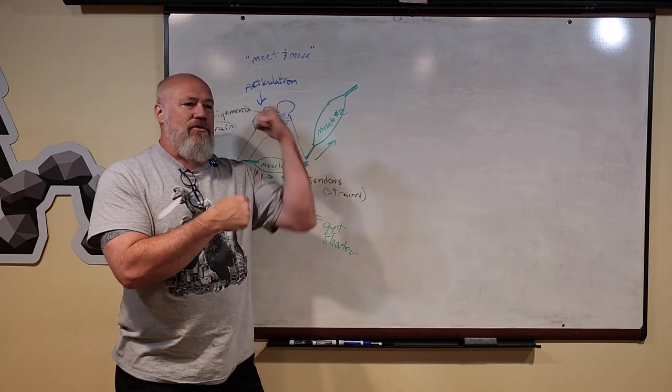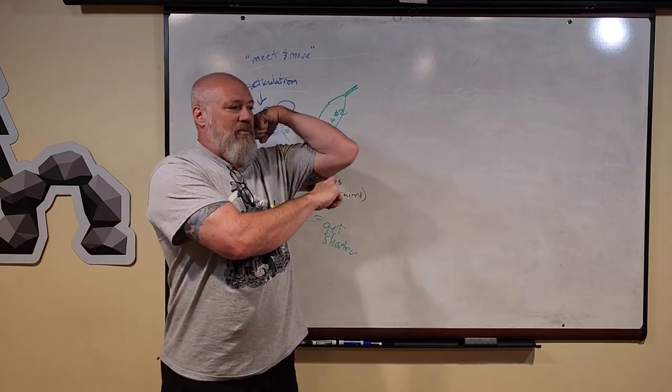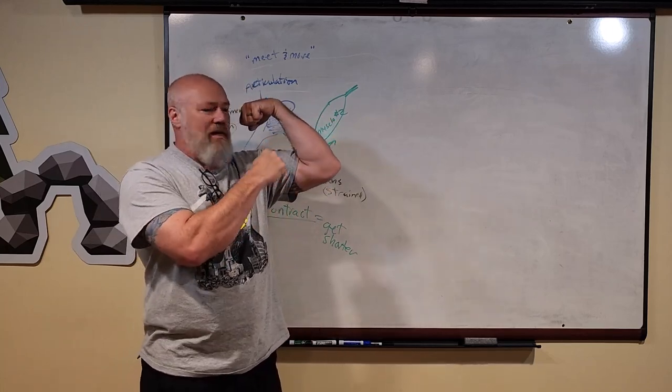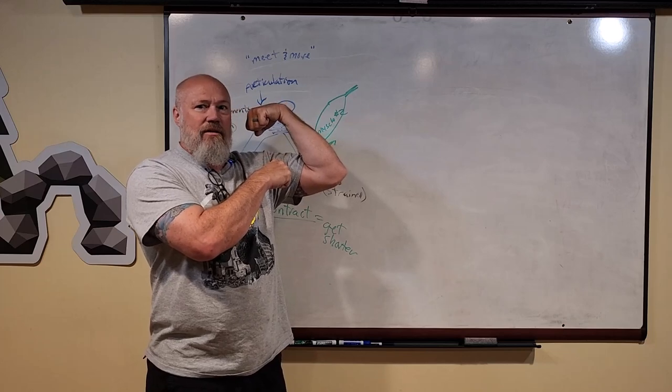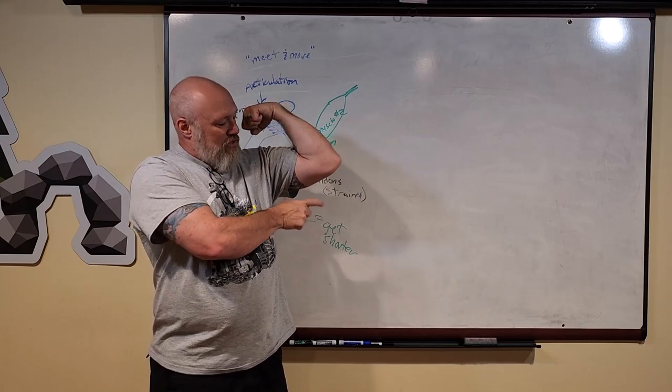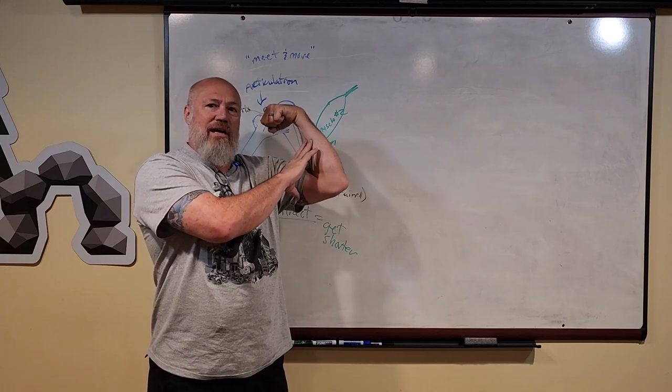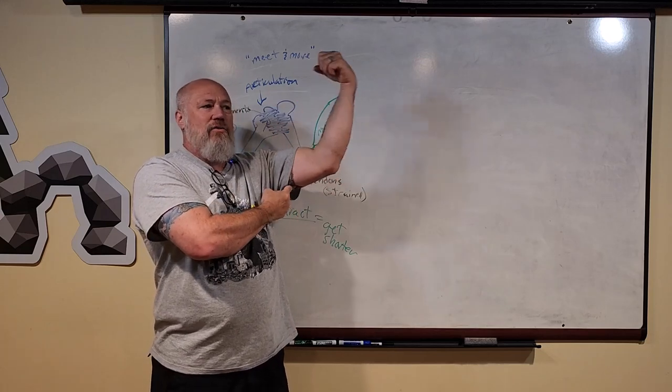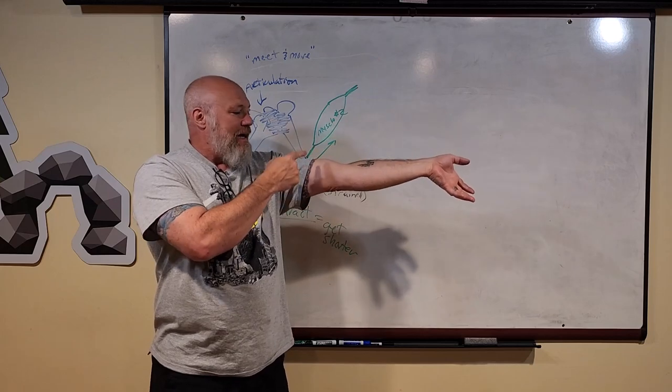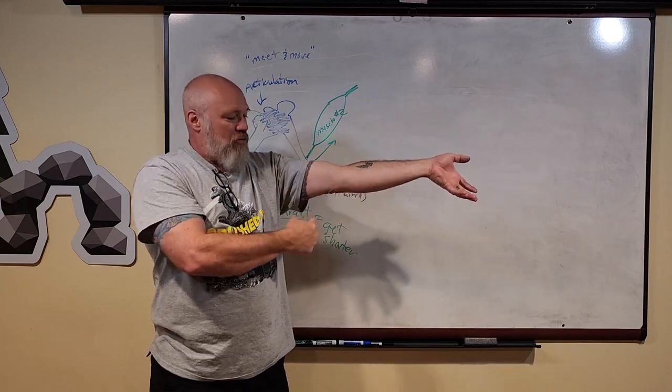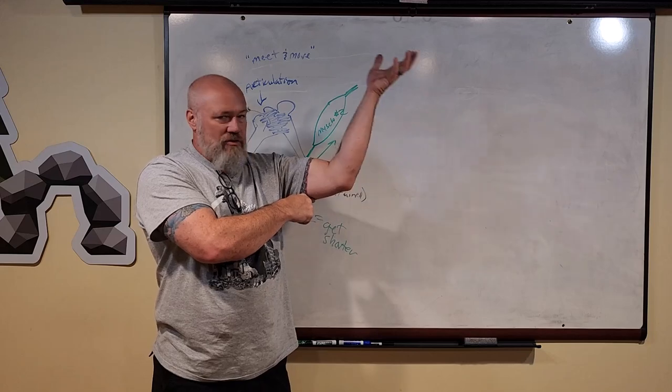Now when the muscle on the other side of my arm, my tricep, wants to contract to open it back up, this one has to relax. So there's another signal that tells this one to get shorter and the one on the other side of the joint that would oppose that movement to relax so I can move my arm out. Now when I need to bring my arm closer, this muscle has to relax so I can bring my arm closer.